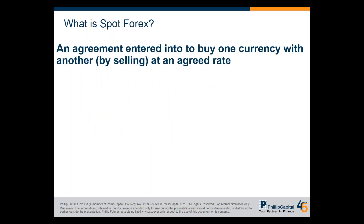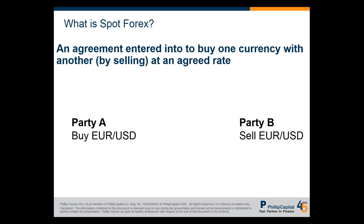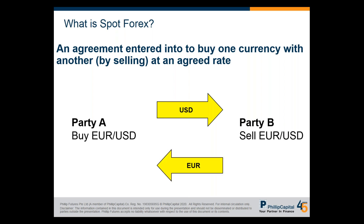So what is forex? Forex is an agreement where you enter into to buy one currency by selling another at an agreed rate. For example, party A is buying Euro/USD and party B will be selling Euro/USD — meaning party A is giving USD to party B and receiving euros. The net effect is party A is buying euro and selling USD. For spot forex when you're trading, there's no actual transaction of the currency taking place — what we get is the net difference between the buying and the selling price.